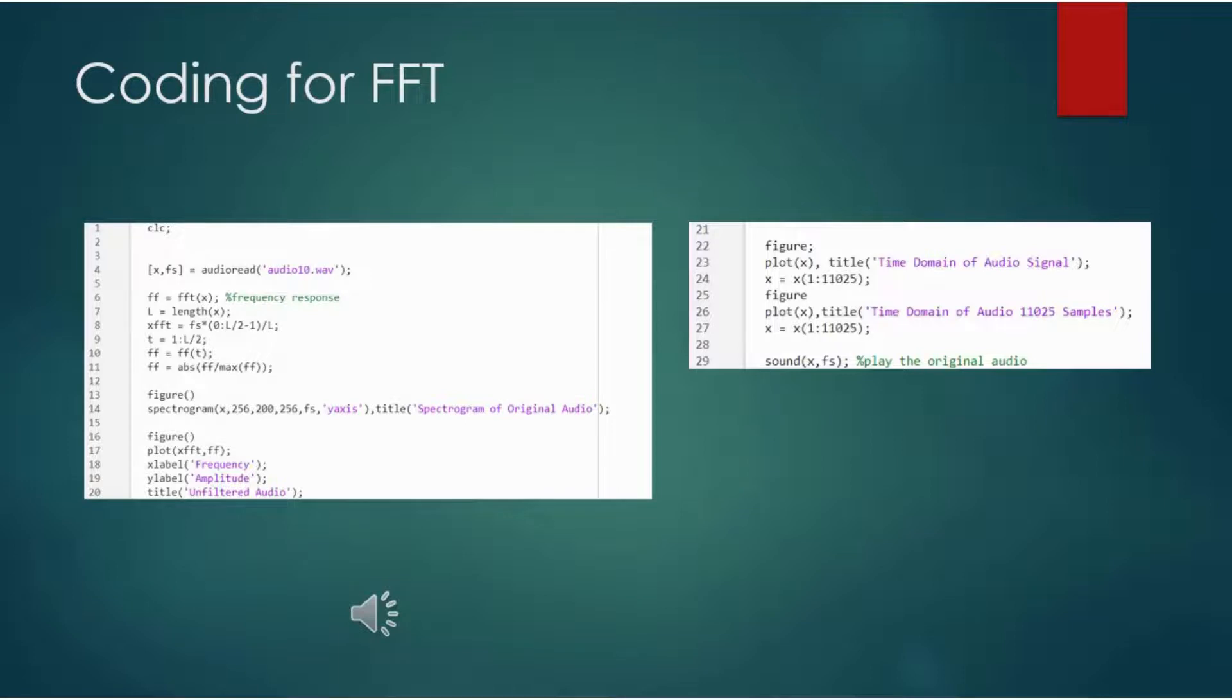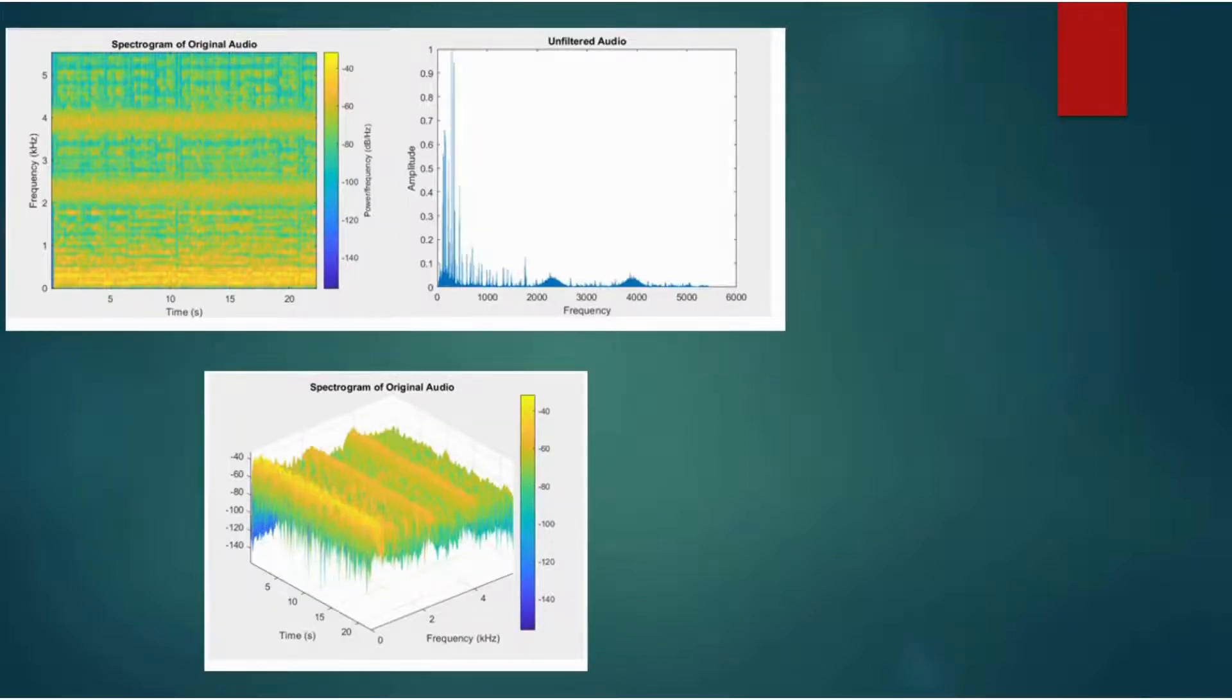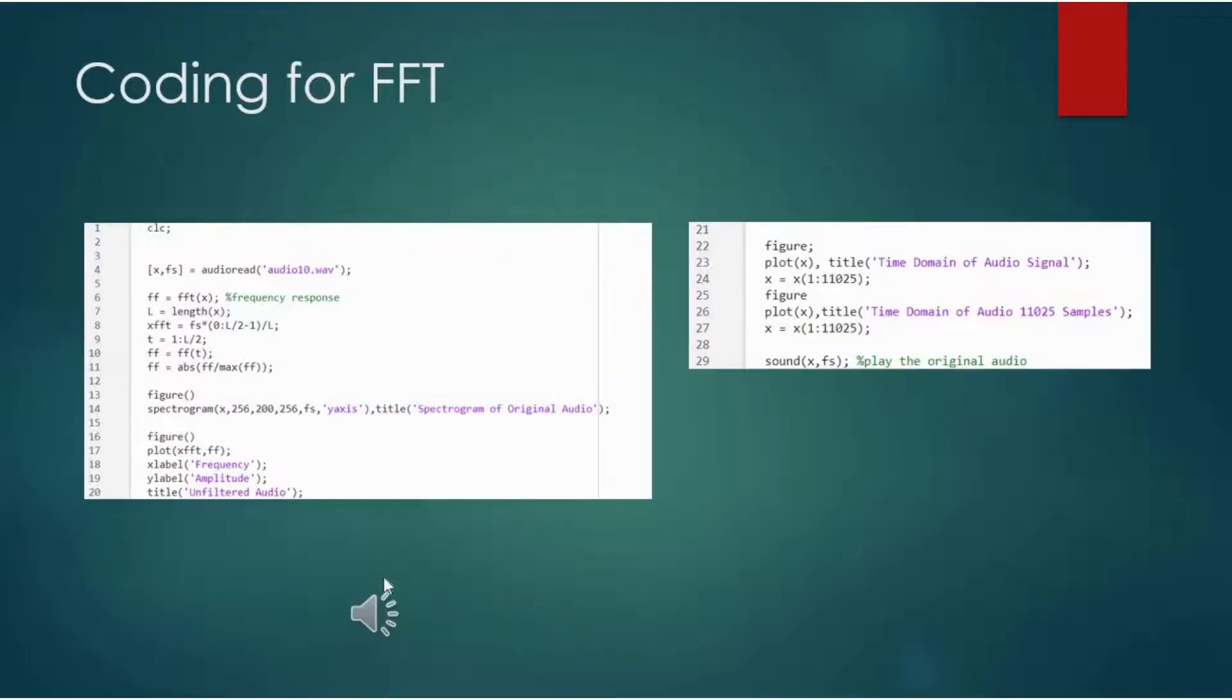From the FFT method, you insert the audio and run the coding, and you will obtain this type of spectrogram. The spectrogram shows two bandpass filters which represent noise that ranges from 2000 to 2500 and 3600 to 4200 Hz. So you can hear the original audio.